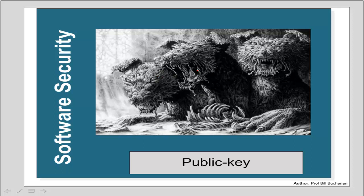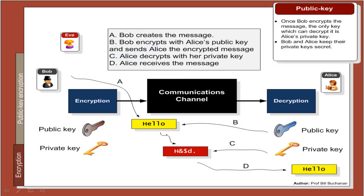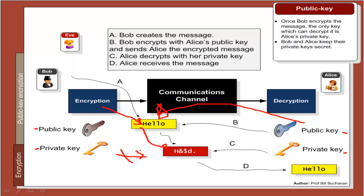Let's now look at public key encryption. With public key encryption both Bob and Alice create a public and private key. If Bob wants to send a secret message to Alice, she sends him her public key. Bob then encrypts the message with her public key to get the ciphertext, and even Bob can't decrypt it — only Alice's private key can decrypt it back again.